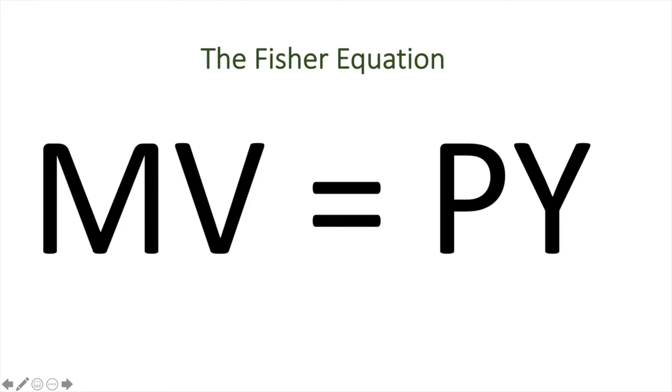The identity shown will always hold as the value of what is purchased will equal the value of output produced. Essentially, MV is equal to the value of purchases made in an economy in a given period of time, whereas P times Y is equal to the value of final goods and services sold in that same period of time. It is always true that if something is sold, it has also been purchased. This is why these values will always equal each other.